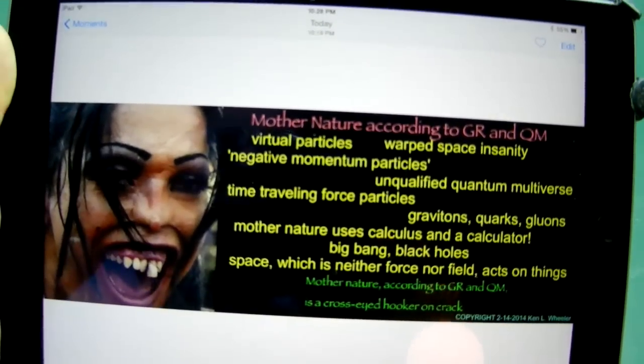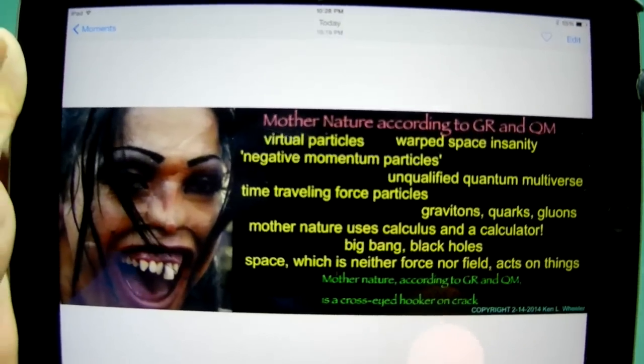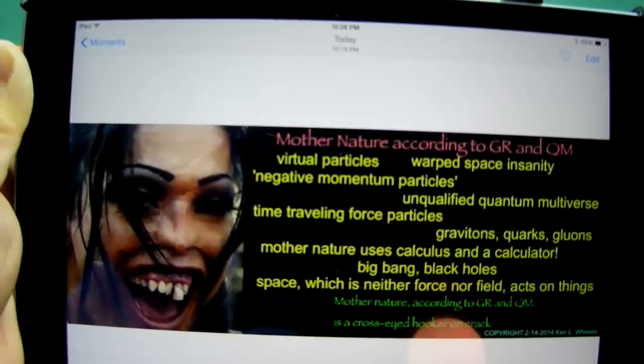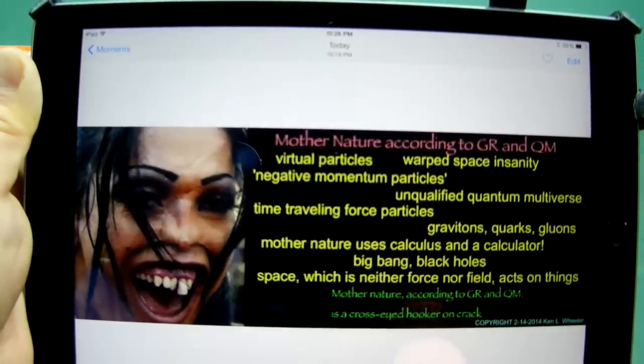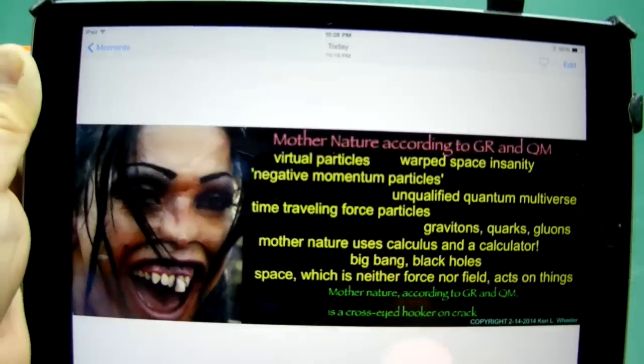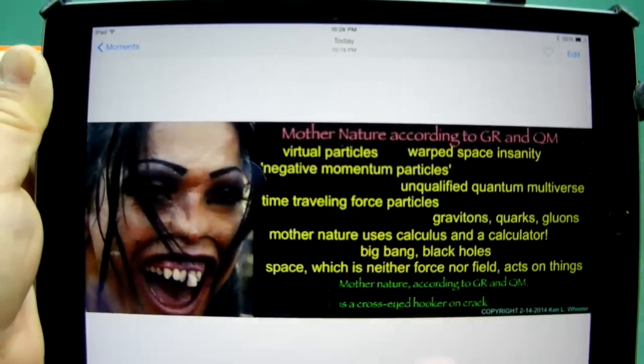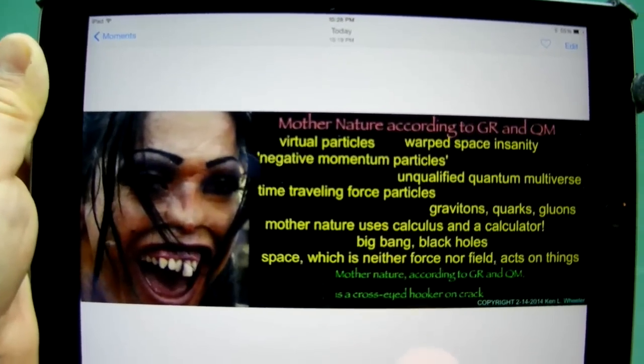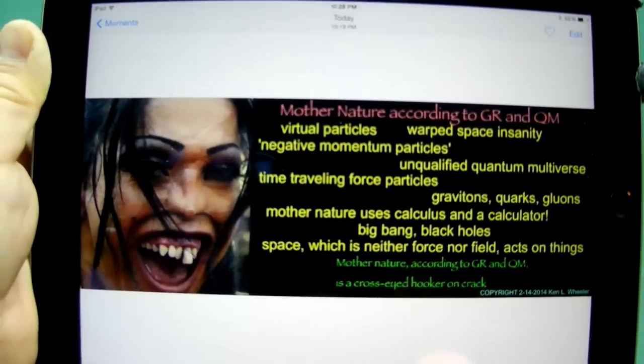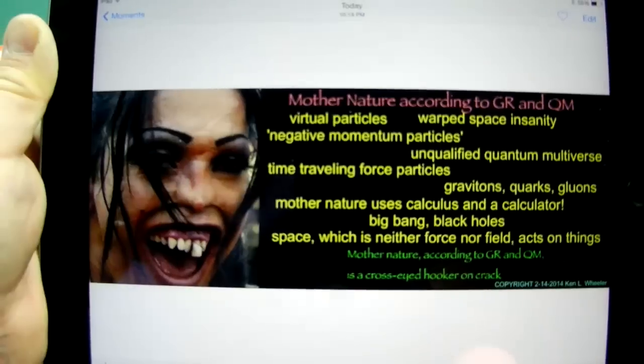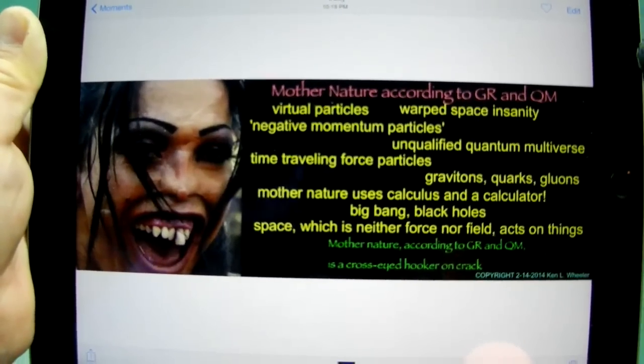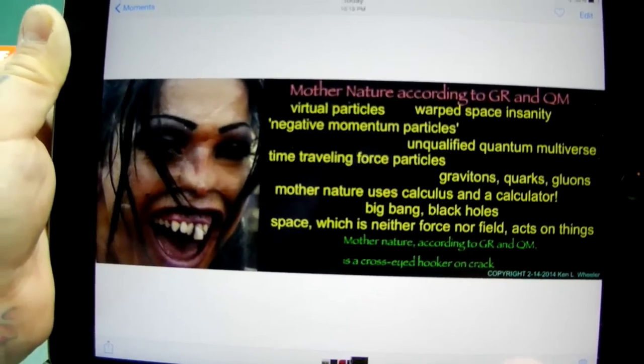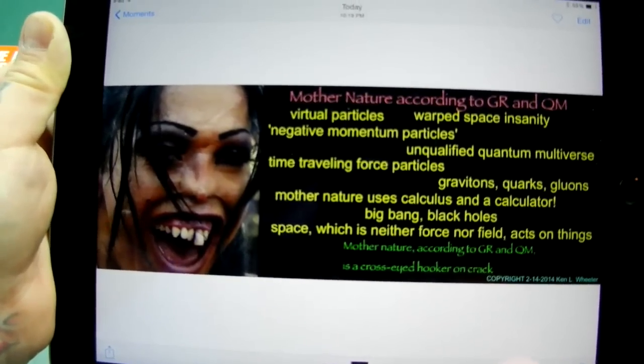Here is the cross-eyed, insane crack whore of general relativity. Virtual particles, warp space insanity, negative momentum particles, unqualified quantum multiverse, time-traveling force particles. Mother nature uses calculus and a calculator. Big bangs and black holes, space, which is neither a force nor a field, acts on things and does things. Insanity! Insanity. Tesla said this was an insanity. Oliver Heaviside said this was an insanity. C.P. Steinmetz said this was an insanity.